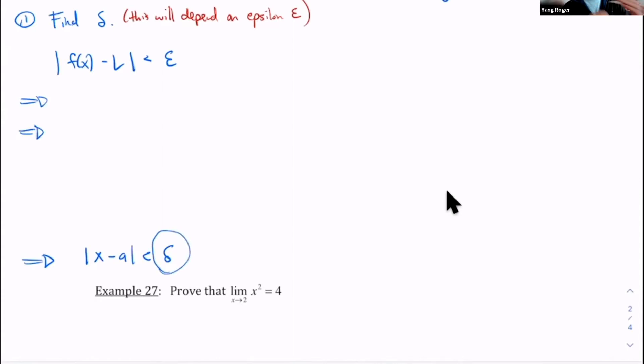So if I can always win this game, then the limit exists. If there's an epsilon where I can't win the game, then the limit doesn't exist. Okay, so let's take a look and see how this works.